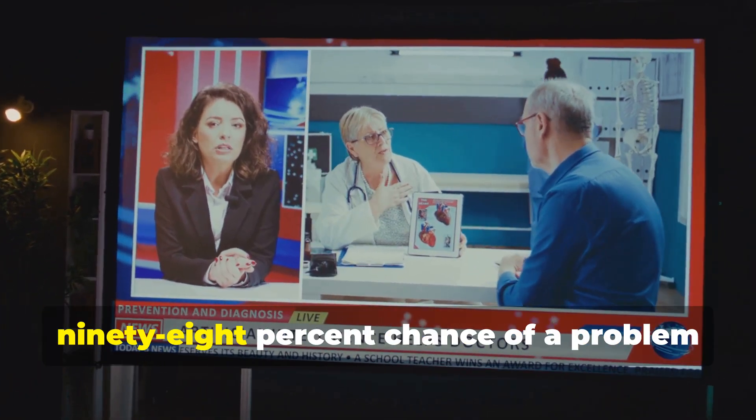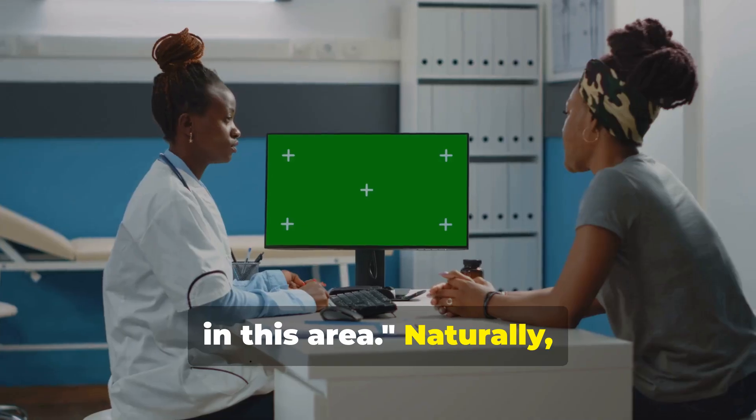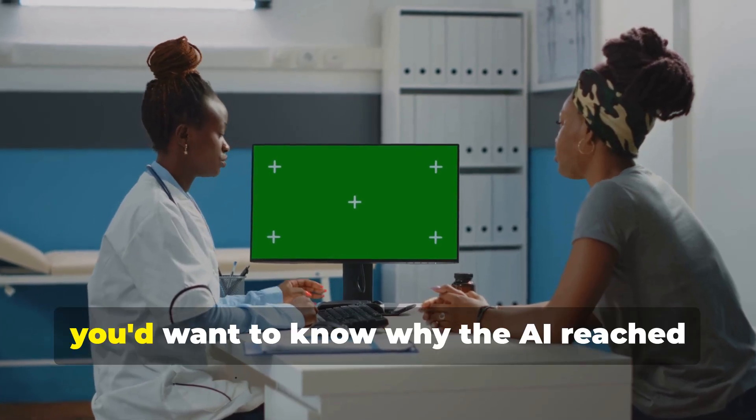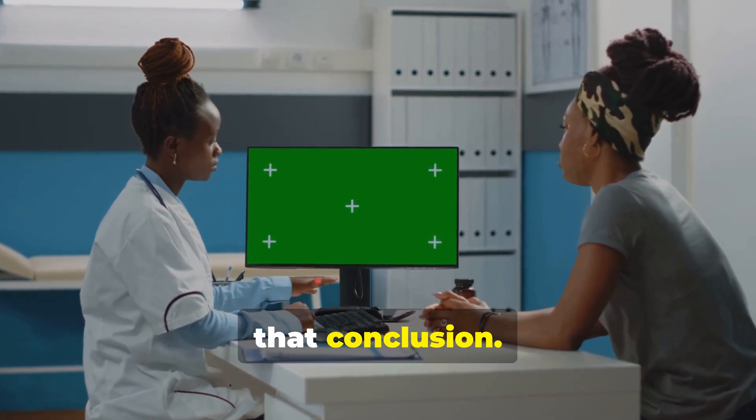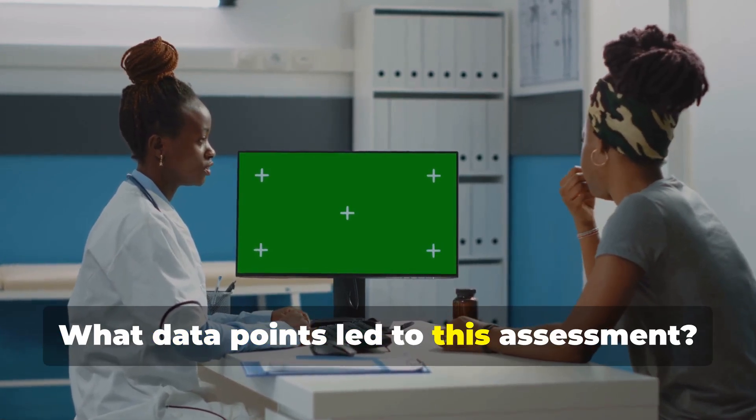Well, the algorithm indicates there's a 98% chance of a problem in this area. Naturally, and understandably, you'd want to know why the AI reached that conclusion. What factors did it consider? What data points led to this assessment?